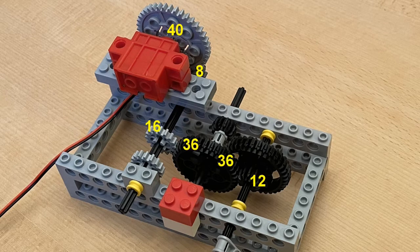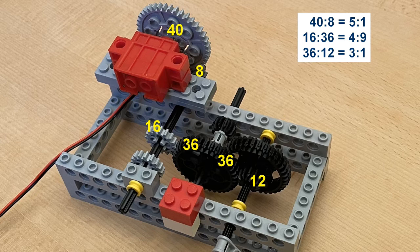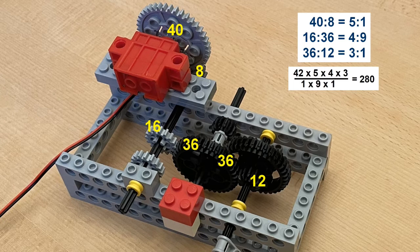Again the calculation fits with our measurements. By using different gears we could make a speed of between 1 and 280.